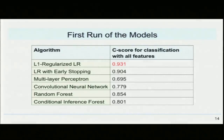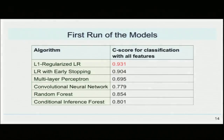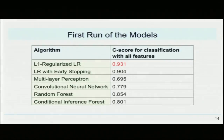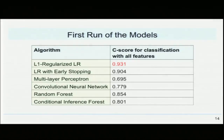In our first run of the six machine learning models, we obtained the C score for classification with all features. The L1 regularized logistic regression model had the highest performance, a C score of 0.931, higher than the other widely known models. We then tried various optimization techniques to improve the tumor diagnosis accuracy.